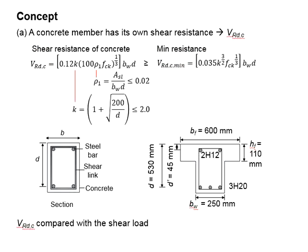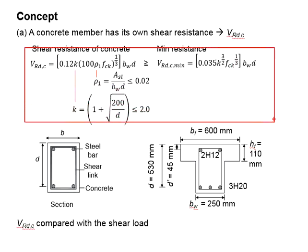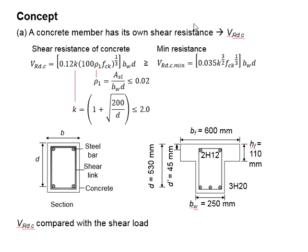VRDC is determined by VRDC and VRDC minimum, whichever is greater. If you observe the equations for VRDC and VRDC minimum, you see they are all in the functions of BWD, which represents the effective shear areas of the section.